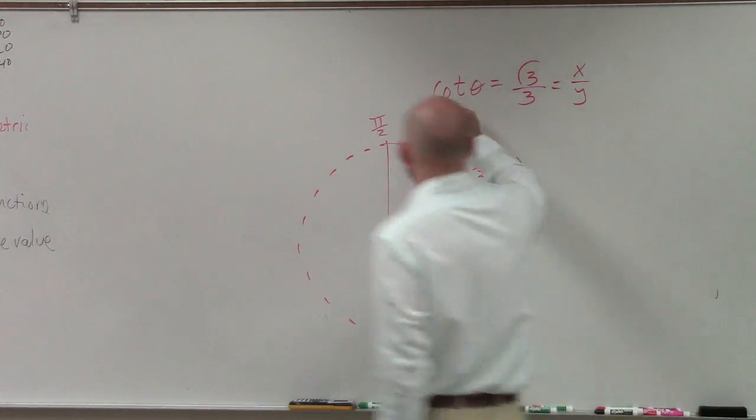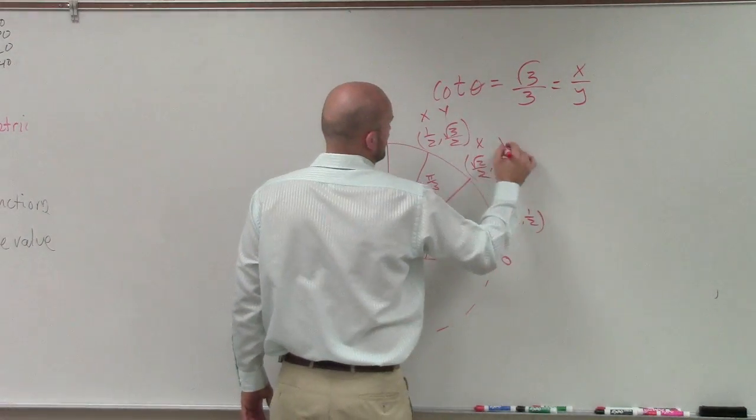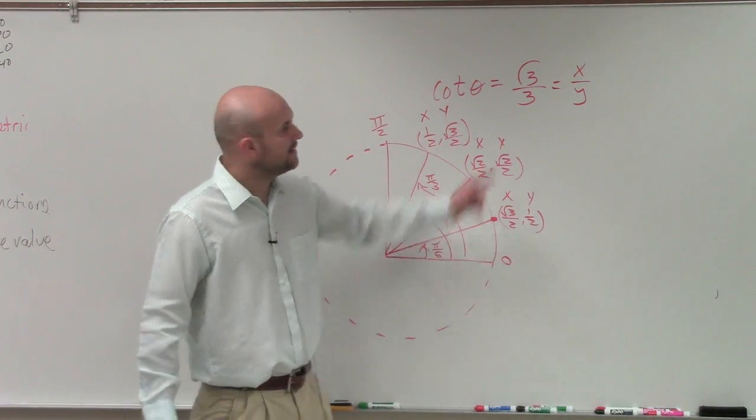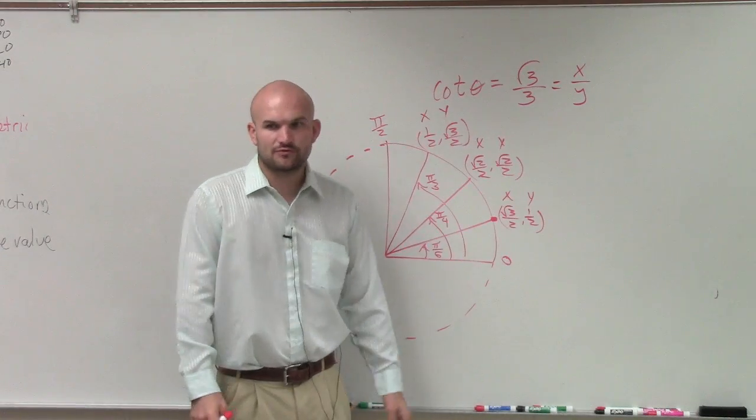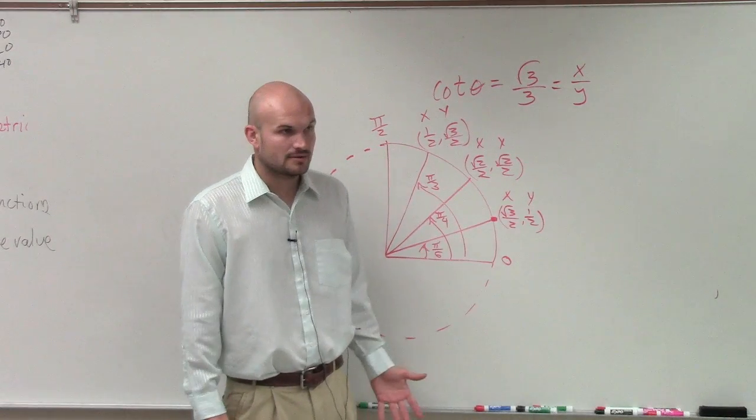Each one of those points has an x and y coordinate. Which one of those, however, is going to produce square root of 3 over 3?